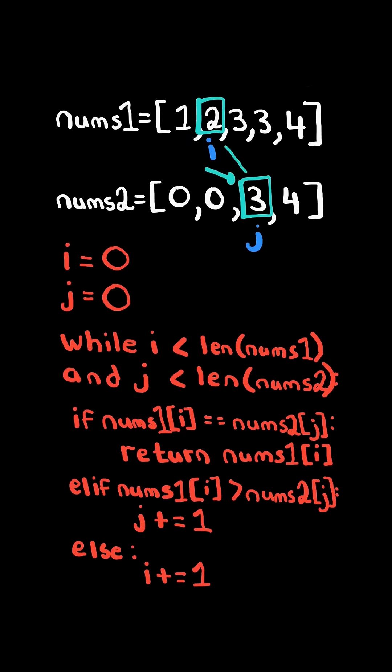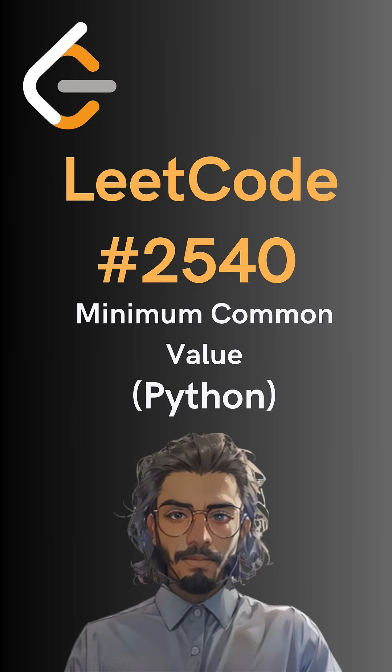Again, nums2[j] is greater than nums1[i], so we increment i. Now nums1[i] equals nums2[j], so we return that value. Here's the code to do so. Please like and follow for more.